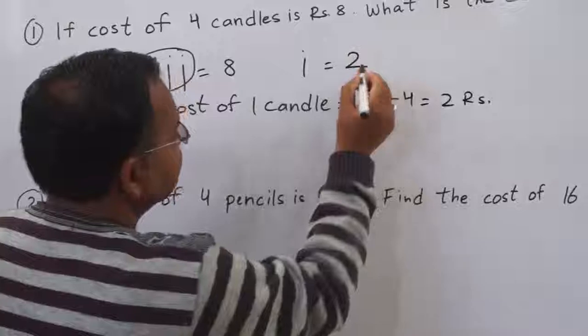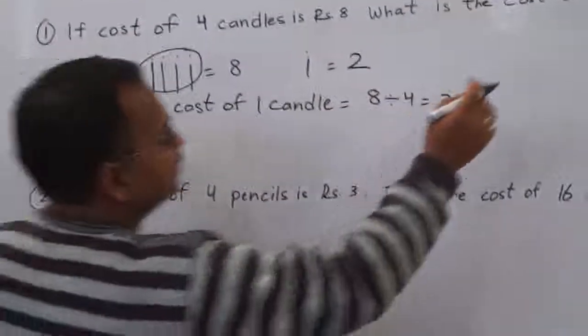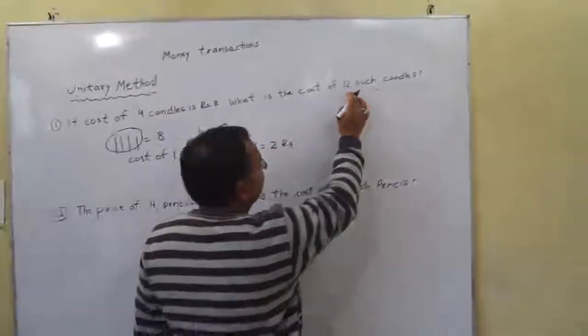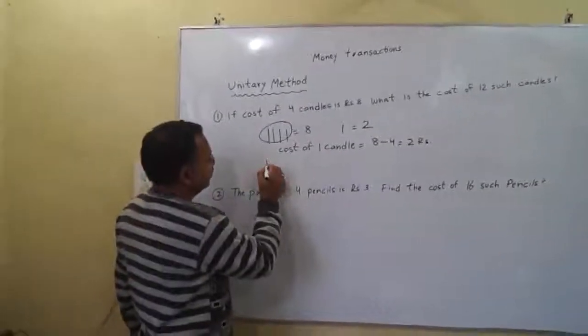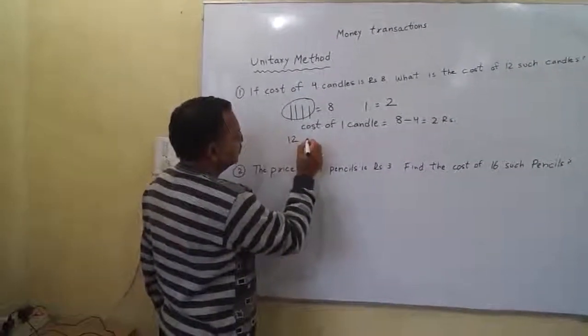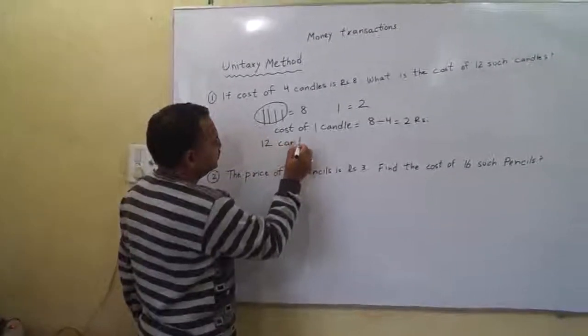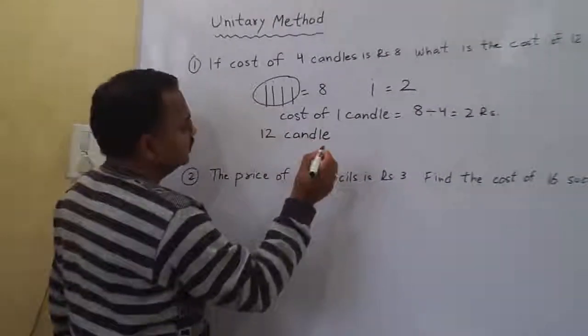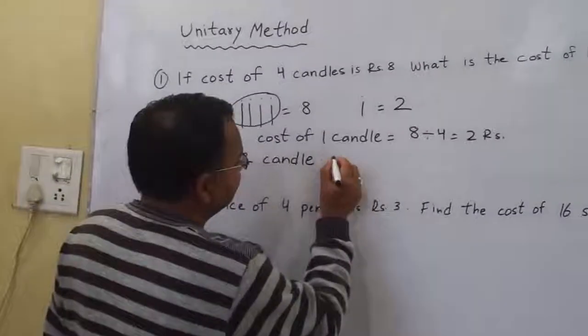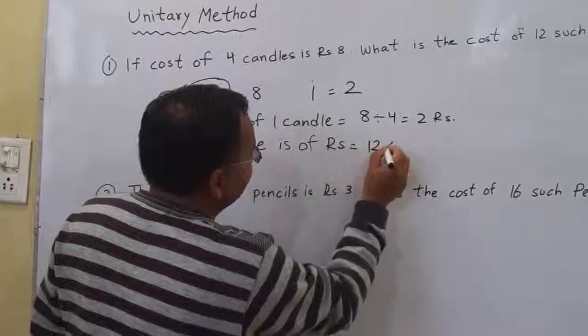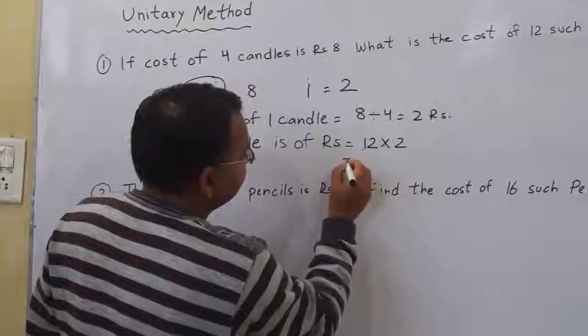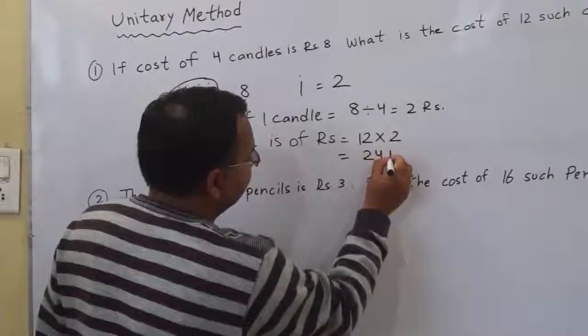1 candle is rupees 2. What is the cost of 12 such candles? 12 candles is 12 multiplied by 2, that is 24 rupees.